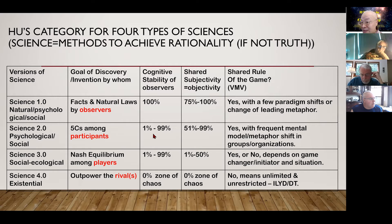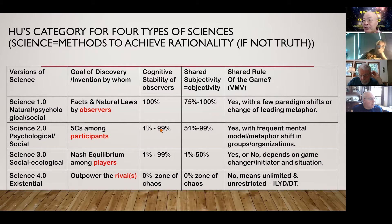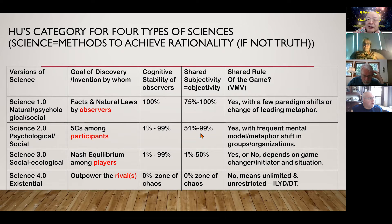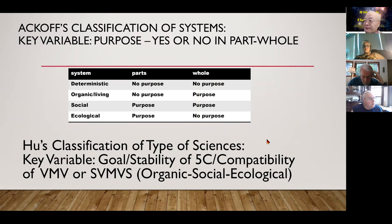The role changed and the goal also changed. Here, cognitive stability of observers could be anything — between one person and many — you can't have zero because nothing is going on, but it's not 100% either, because if it's 100% you go back to Science 1.0. For shared subjectivity equaling objectivity, it should fall somewhere in the top half of the range. The shared rule of the game: the answer is still yes, but here there are frequent mental model or metaphor shifts.